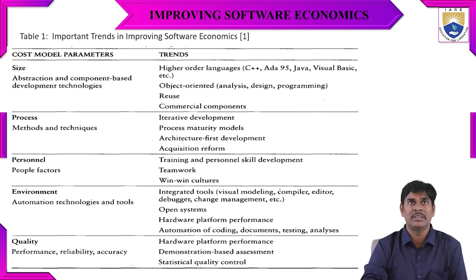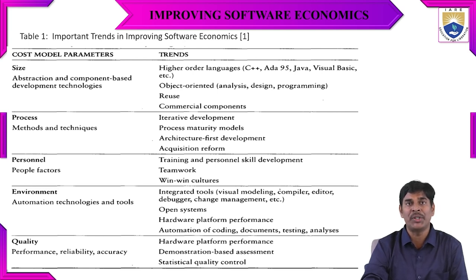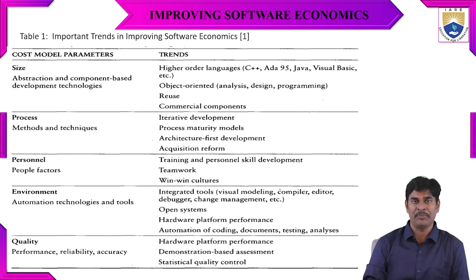The next parameter is process. Here we use methods and techniques such as iterative development, process maturity models, architecture-first development, and acquisition reform. To improve the process, we use different types of iterative development, check process maturity, verify architecture, and manage acquisition of different types of process components.